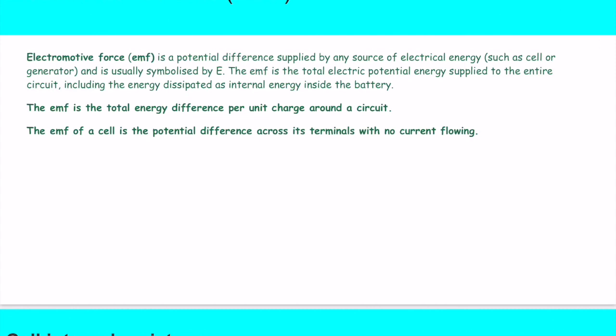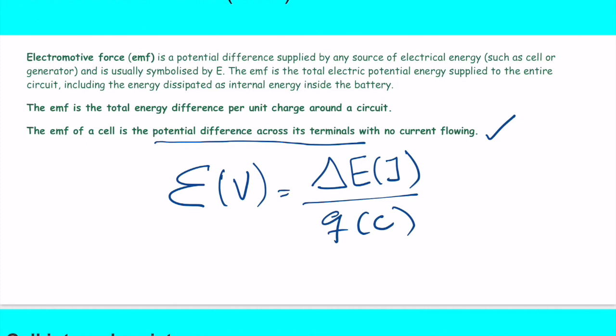So what is electromotive force? The electromotive force, or EMF, is the total energy difference per unit charge around the circuit. The definition of electromotive force in volts is the change of energy per unit charge in coulombs. Another way of understanding it is the potential difference across the terminals of a cell when there is no current flowing.